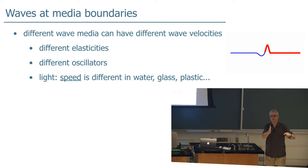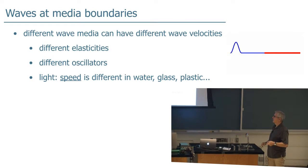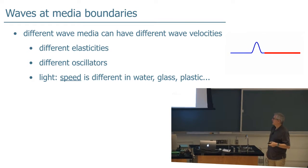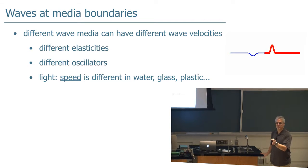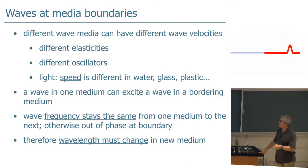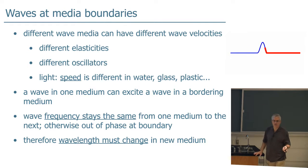At a boundary between one medium and another, the oscillations in the first medium can excite oscillations in the second medium. Therefore, necessarily, the wave frequency stays the same as it goes from one medium to the other. Otherwise, you get out of phase at the boundary, and you can't have that. They have to be oscillating in sync with each other. If the speed changes but the frequency stays the same, that must mean the wavelength changes in the new medium.